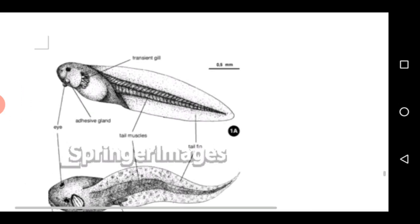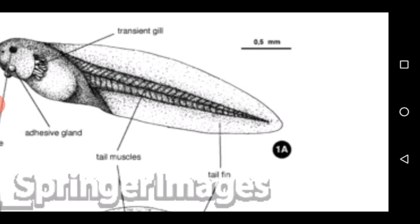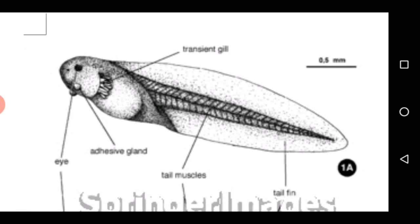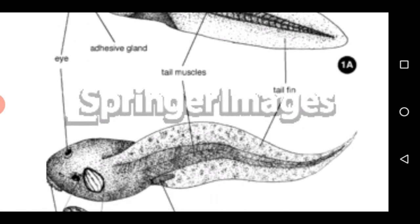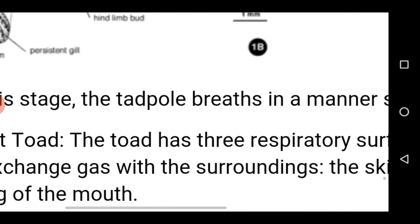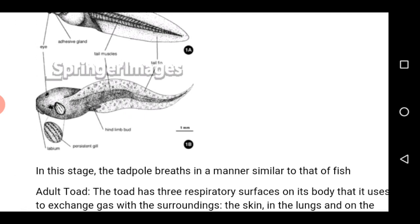The diagram shown shows the external gill in the tadpole, where we have a transient gill — that is where exchange of gas occurs at the first stage of tadpole life in water — after which the internal gill develops, and the gill is now protected or covered by a spout. At this stage the tadpole breathes in a manner similar to that of fishes.